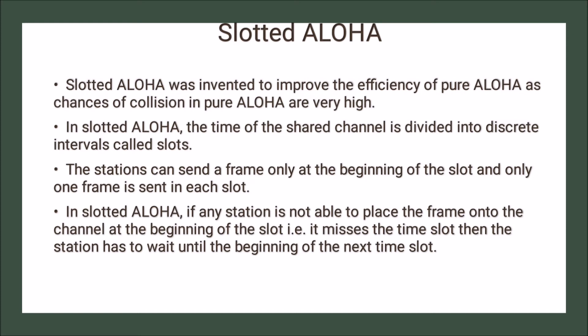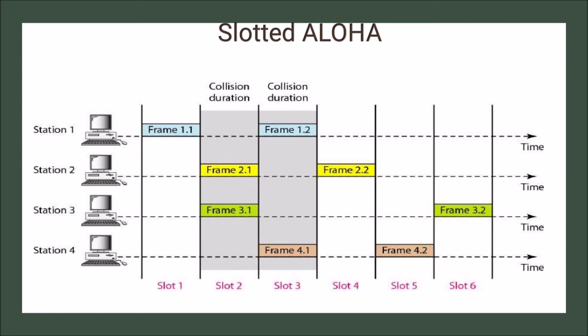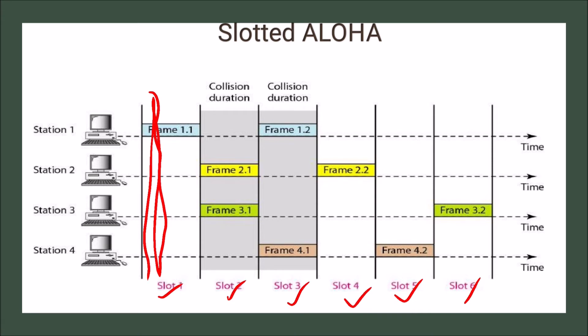A station can only send a frame at the beginning of the slot. If a station is not able to place the frame onto the channel at the beginning of the slot — meaning it misses the time slot — it has to wait until the beginning of the next time slot. For example, the channel is divided into time slots 1 through 6. In slot 1, station 1 sends frame 1.1 and stations 2, 3, and 4 are not sending, so there is no collision.